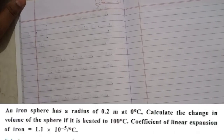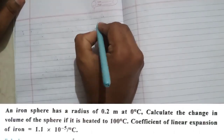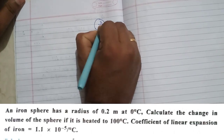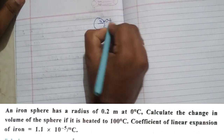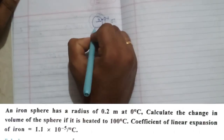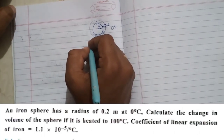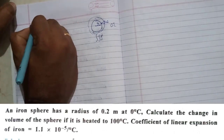Next problem: An iron sphere has a radius of 0.2 metre at 0 degree centigrade. Calculate the change in volume of the sphere if it is heated to 100 degree centigrade. The coefficient of linear expansion of iron is 1.1 into 10 to the power of minus 5 per degree centigrade. Here they have taken a sphere; since it is a three-dimensional geometry, they are asking us to calculate the change in volume.